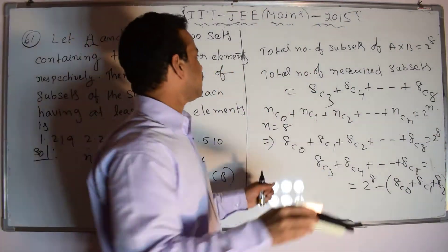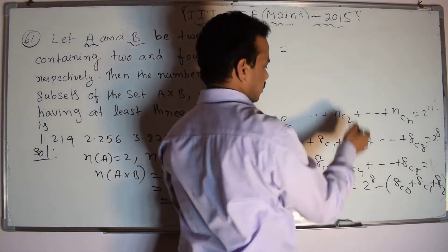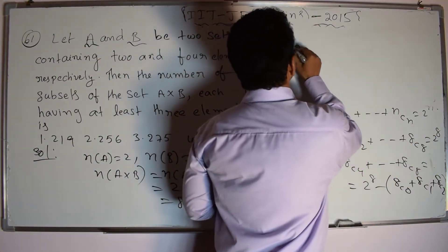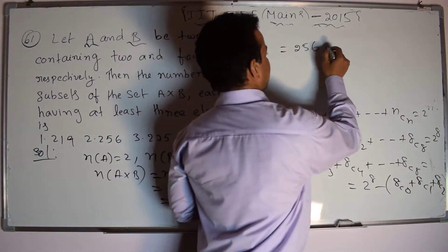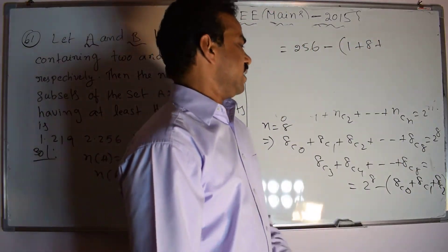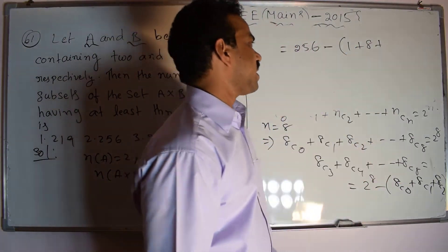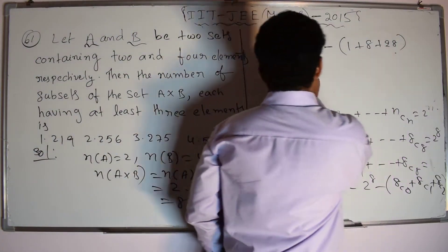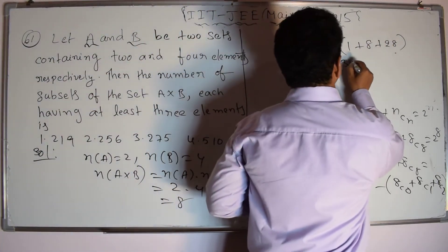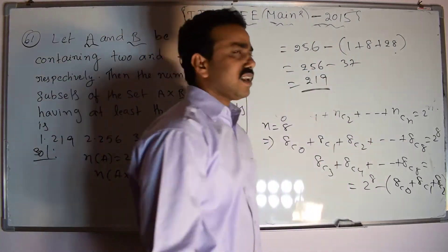Let me simplify. 2 power 8 = 2 power 4 × 2 power 4 = 16 × 16 = 256. Now, 8C0 = 1, 8C1 = 8, and 8C2 = 8! / (6! × 2!) = (7 × 8) / 2 = 28. So the result is 256 minus (1 + 8 + 28) = 256 minus 37 = 219. This is the required total number of subsets.